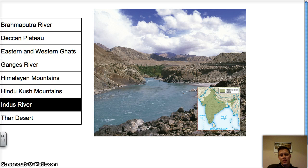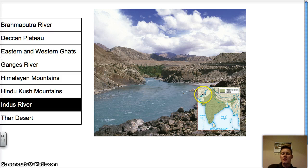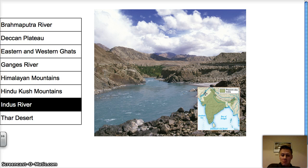Next up is the Indus River, which is very important for the beginnings of early civilizations and human settlements in India. Just south of the Hindu Kush mountains, we have the Indus River. It actually starts in the Himalayas, and as it travels it picks up more water from the Hindu Kush — snow melting there gathers into the Indus River. It empties into the Arabian Sea, but it creates some of the world's best farmland in the plains by carrying sediment and silt and dropping it in the valley.